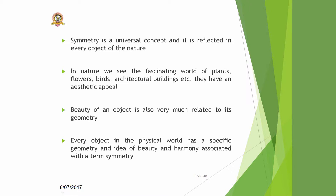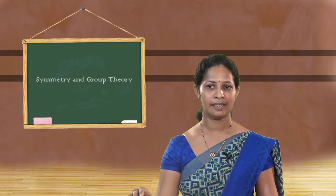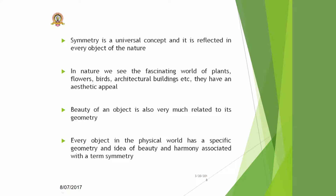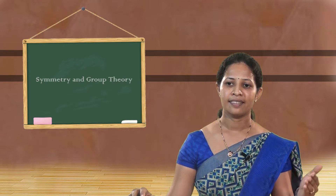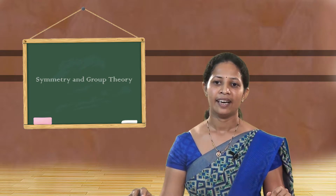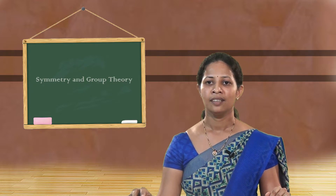In nature, we see the fascinating world of plants, flowers, birds, and architecture buildings like the Lotus Temple, Taj Mahal, etc. They have an aesthetic appeal and exhibit a certain type of beauty. The beauty of an object is also very much related to its geometry. Every object in the physical world has a specific geometry, and the idea of beauty and harmony is associated with symmetry.